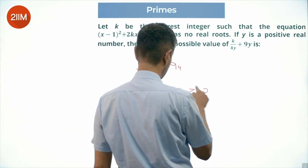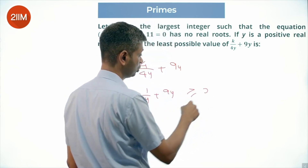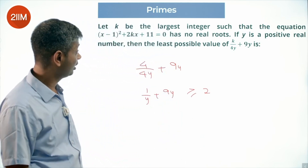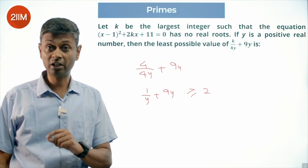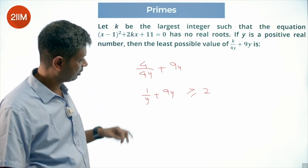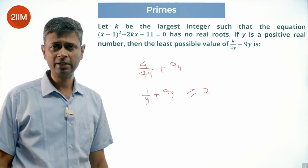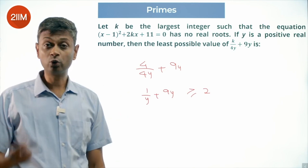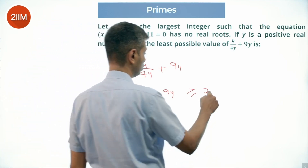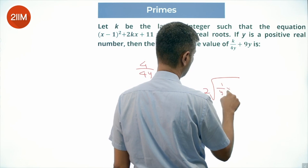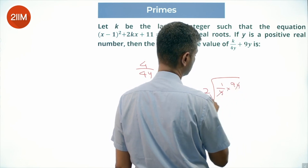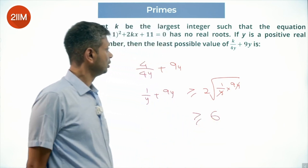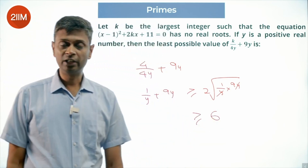Using AM-GM: a plus b is greater than or equal to 2 times the square root of ab, since arithmetic mean is greater than or equal to geometric mean for positive real numbers. Applying this to 1/y and 9y: the sum is greater than or equal to 2 times the square root of (1/y times 9y). Square root of 9 is 3, so this is greater than or equal to 6. The least possible value is 6.